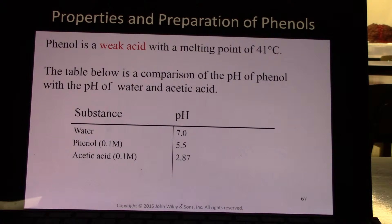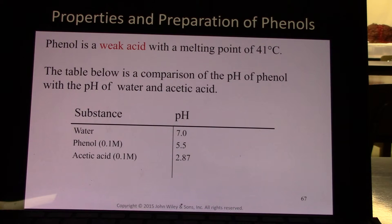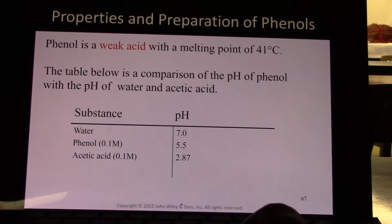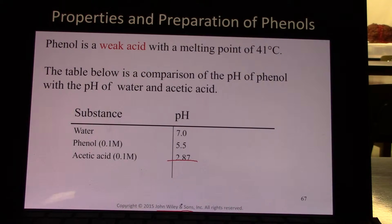Phenol is a weak acid with a melting point of 41 degrees Celsius, so it is a solid at room temperature. The pH is 5.5, so it's a weak acid. The table below shows a comparison of the pH of phenol versus water, which is 7, and acetic acid, which is much more acidic with a pH down to 2.87.